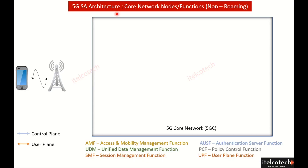Let's understand 5G's standalone architecture and the different nodes that are available in a core network. As we know, the architecture splits the control and user plane separately in 5G. Let's talk about the control plane connectivity first.